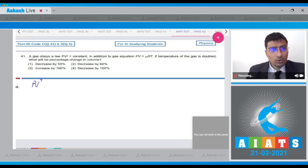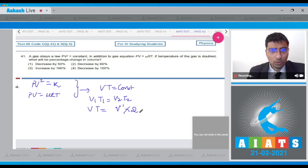Notice students, PV² equals constant K is given. Now we know that PV equals μRT. On combining these two equations, we get that VT equals a constant. This means that V₁T₁ equals V₂T₂, or V times T will equal V' times 2T.